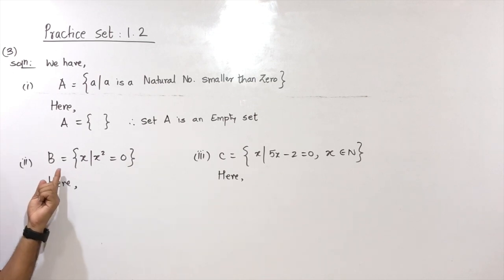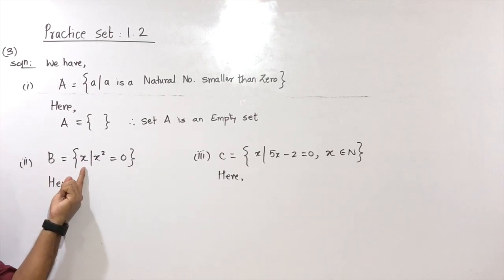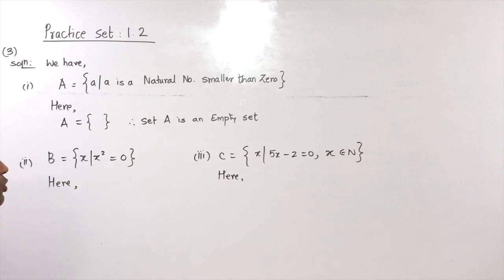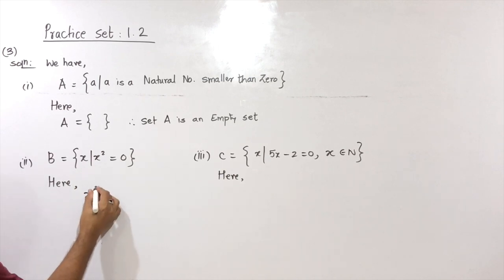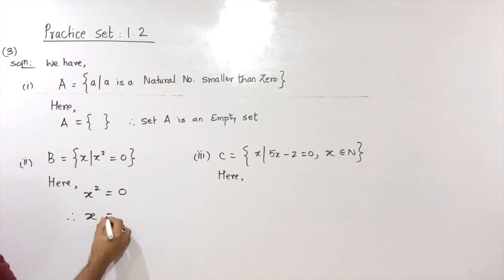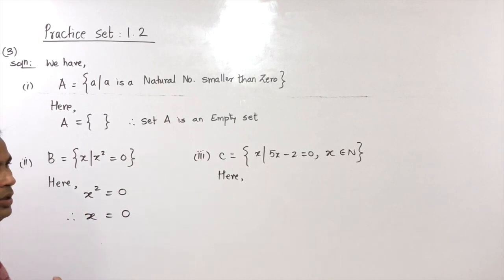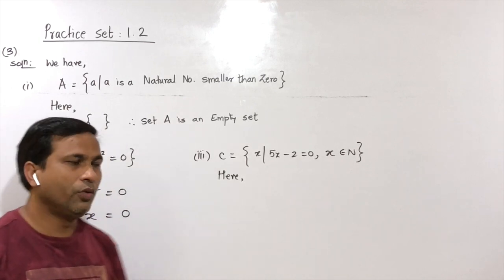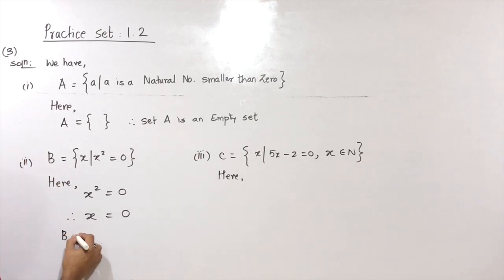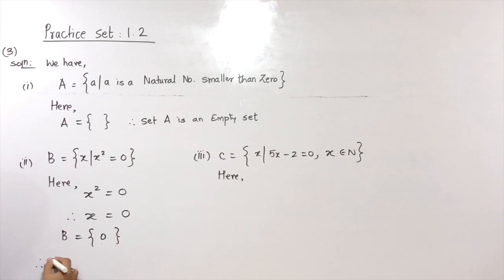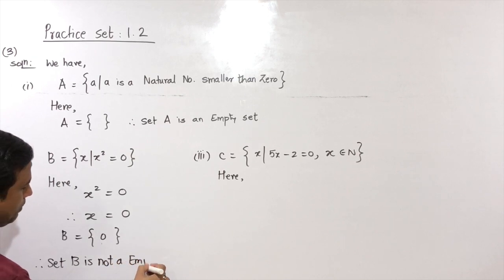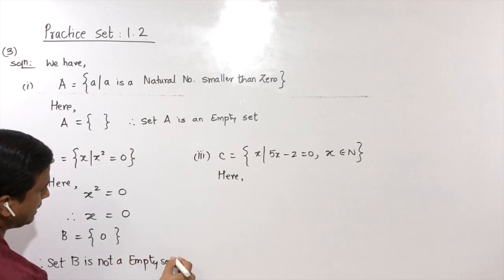Second: B = {X such that X² = 0}. Solving X² = 0 gives X = 0. The square of 0 is 0, so set B has element 0. Therefore set B is not an empty set.